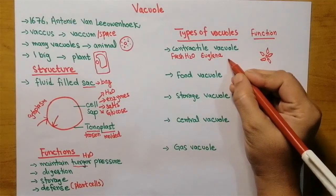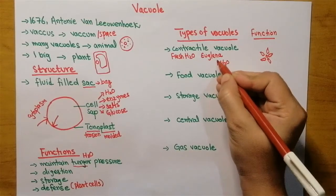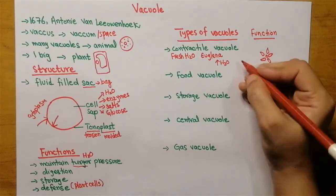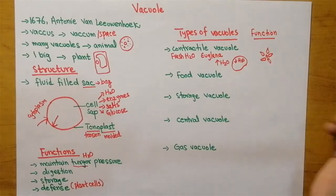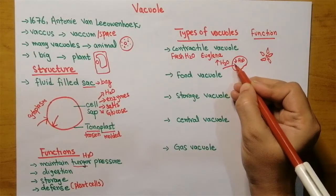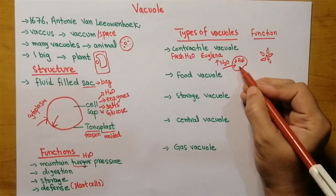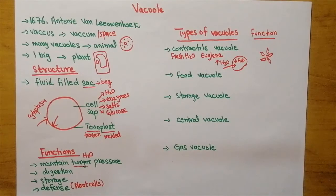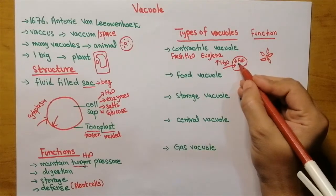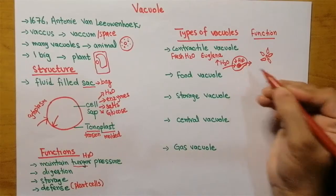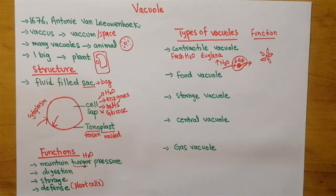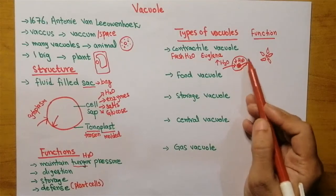In freshwater, more water is present outside the cell than inside, so water will move from outside and gain entry into the cell. The more water comes inside, the more chances of cell bursting. In this case, the contractile vacuole stores water inside or may remove excessive water. In this way it maintains the isotonic environment and protects the cell.